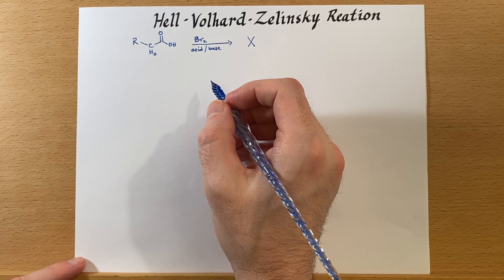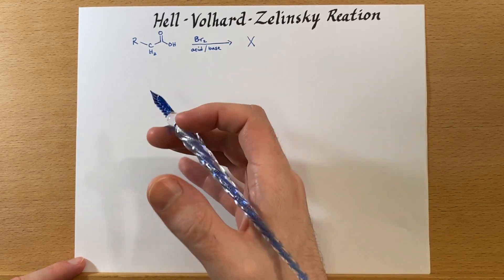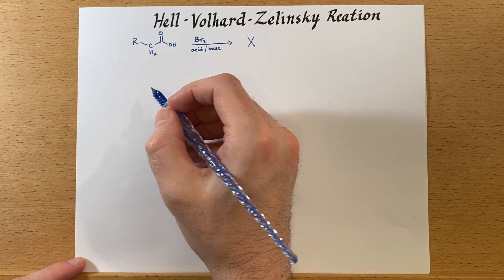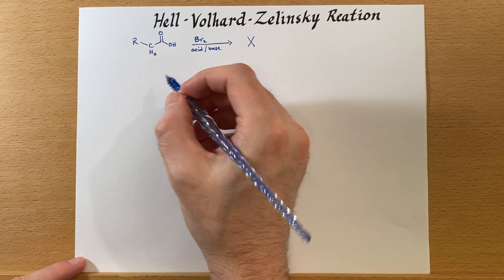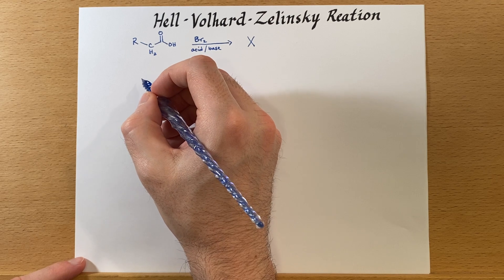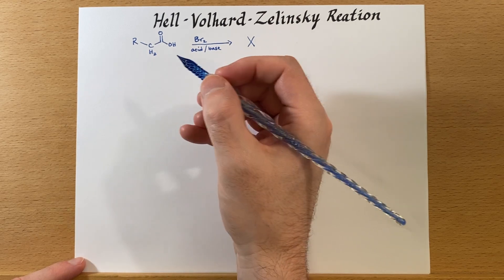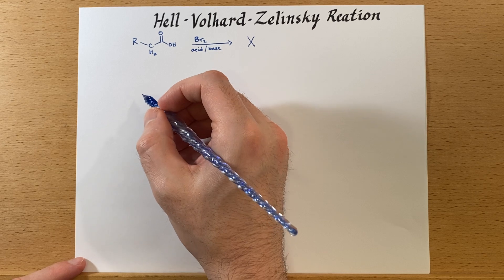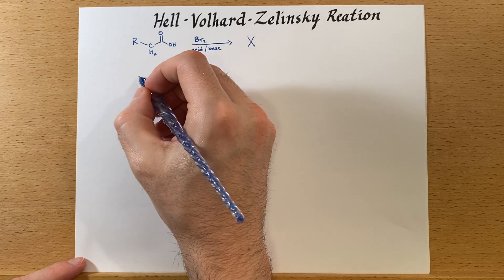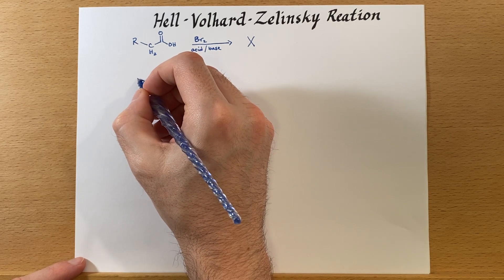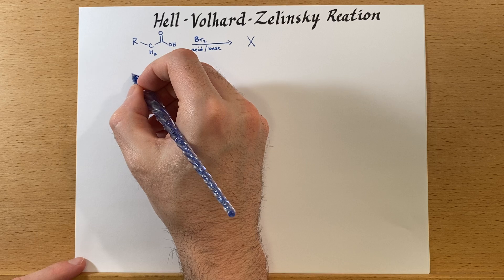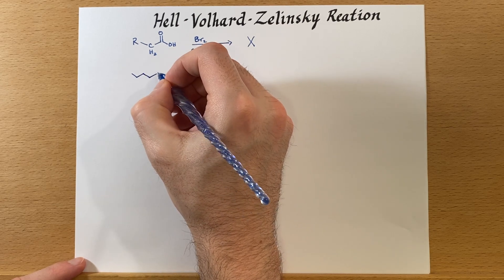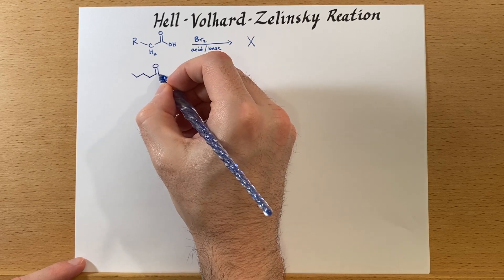Effectively, we go back to the previous video and convert the carboxylic acid into an acid chloride or an acid bromide along the way, and then continue the reaction. Then we just hydrolyze the acid chloride. So it's a little bit of a roundabout way of doing it.